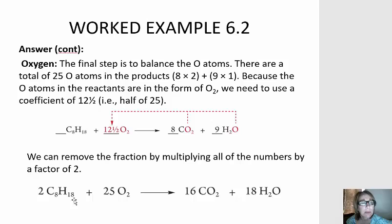Let's look at our hydrogen. 2 times 18 is 36. 18 times 2 is 36. Hydrogen's balanced.